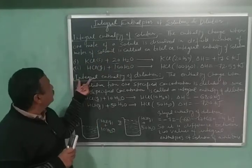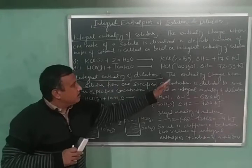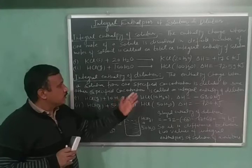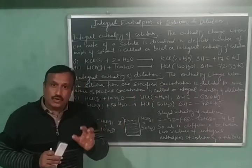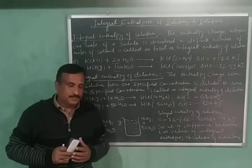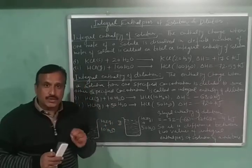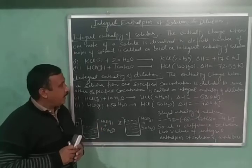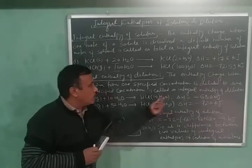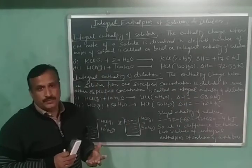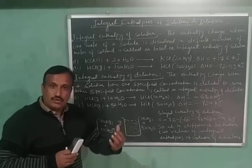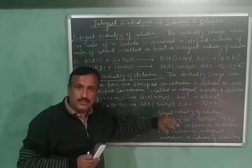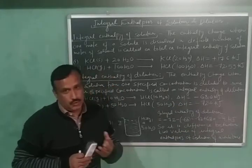Now let us define the integral enthalpy of dilution. The enthalpy change when a solution from one specified concentration is diluted to some other specified concentration is called the integral enthalpy of dilution. Here I have considered two solutions. In the first solution, one mole of HCl is dissolved in 10 moles of water, giving delta H equal to minus 68 kilojoules. In the second solution, one mole of HCl is dissolved in 50 moles of water, giving delta H equal to minus 72 kilojoules.